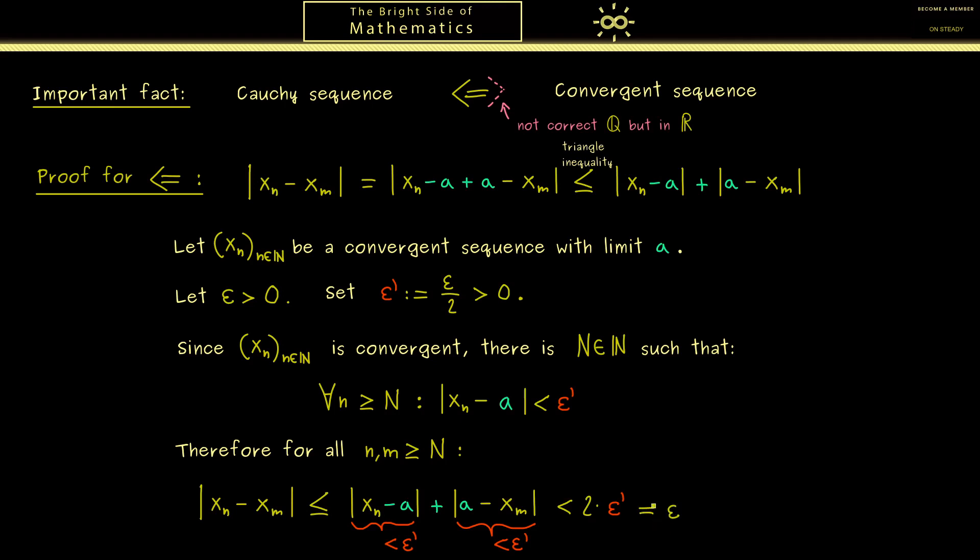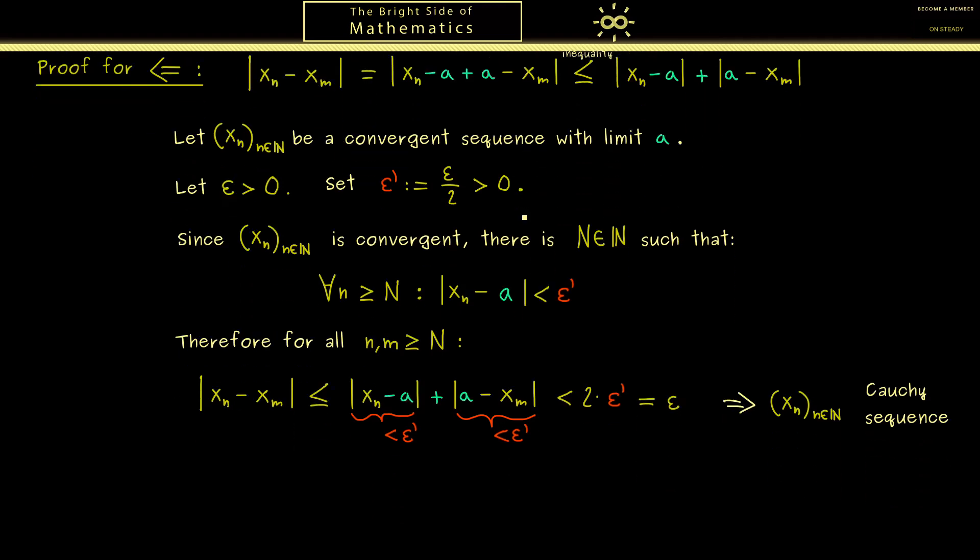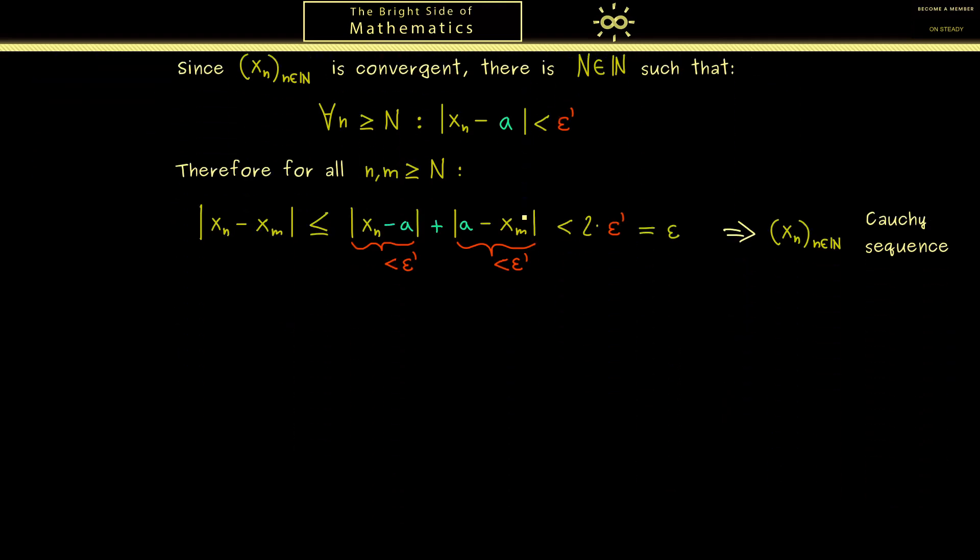And with this we now can put everything together. So for any ε > 0 we find a capital N such that for all n,m ≥ N we find that the distance between both members is less than epsilon. And that's exactly the definition of a Cauchy sequence. With this we have proven the implication we wanted to prove. However for the real numbers we also want the other implication. And one solution to get this is just to take it as an axiom for the real numbers.